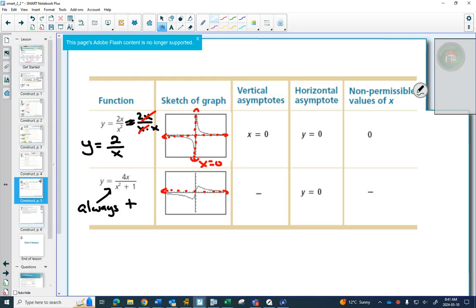What's also interesting in this one is that there is an x-intercept at 0, 0, which is really weird, because you have a horizontal asymptote, but your graph goes through it.